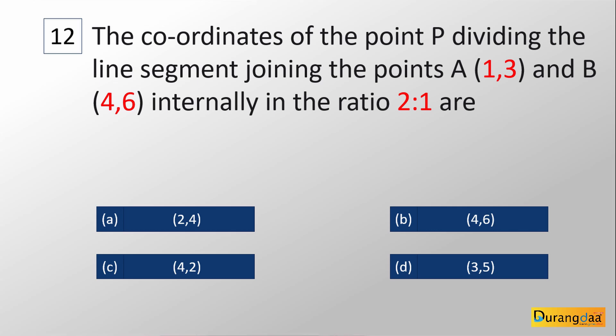Question number 12: The coordinates of point P dividing the line segment joining points A(1, 3) and B(4, 6) internally in the ratio 2:1 are — Option A: (2,4), Option B: (4,6), Option C: (4,2), Option D: (3,5).